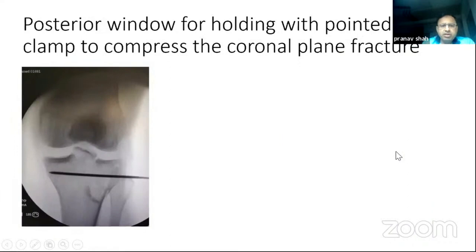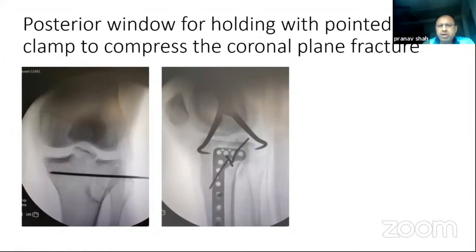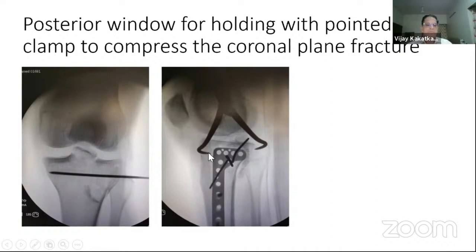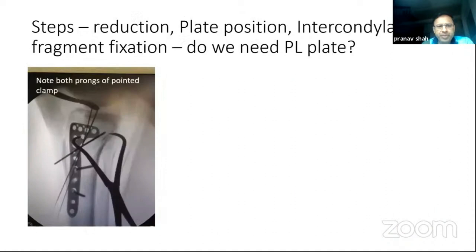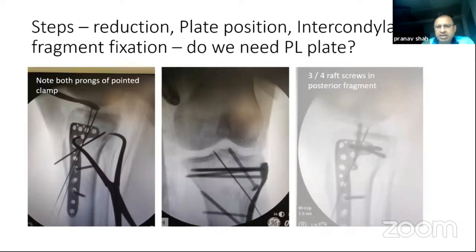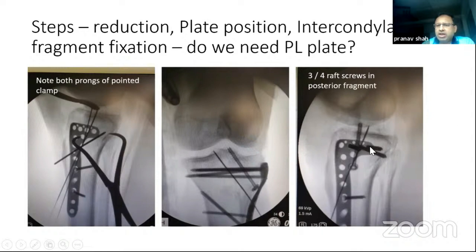Provisional fixation is done with a K-wire, then we place the plate. We ensure the posterolateral to anterolateral fragment is held with a pointed clamp — the posterior prong comes from the posterolateral window and the anterior prong from the anterior window. The intercondylar fragment is also visualized from the anterolateral arthrotomy, reduced, and fixed provisionally with a K-wire before placing a screw. Three of the four raft screws are engaging the posterolateral fragment. A posterolateral plate was not required because the large fragment was well held with the raft plate alone.